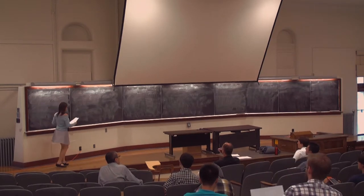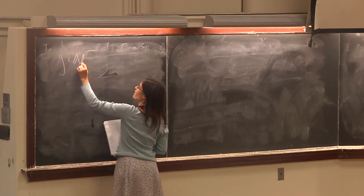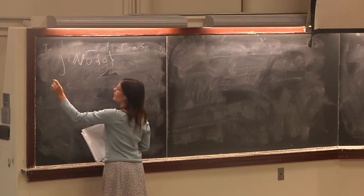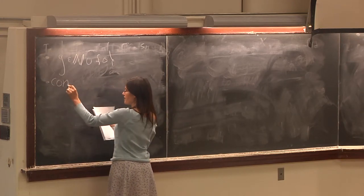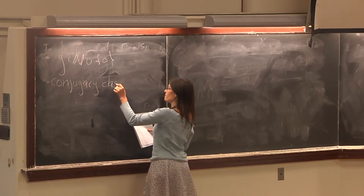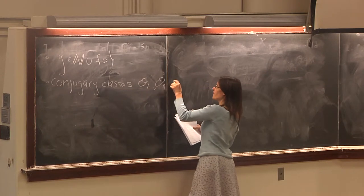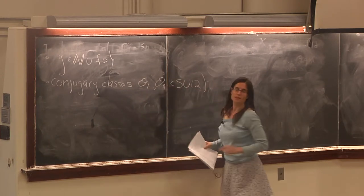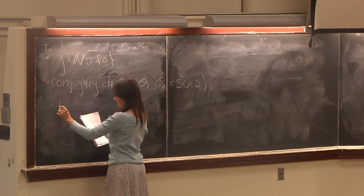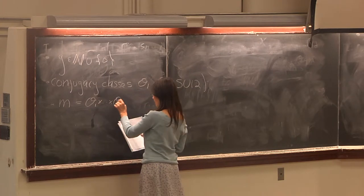I wanted to start out by talking about the goal. Let's say we have a non-negative integer G, and we have some number of conjugacy classes in SU(2).